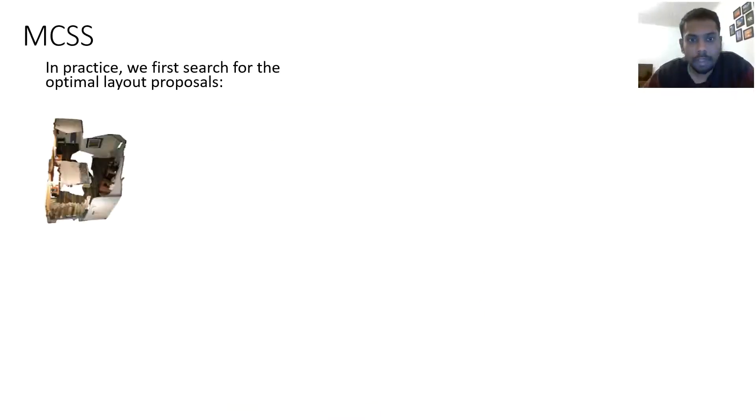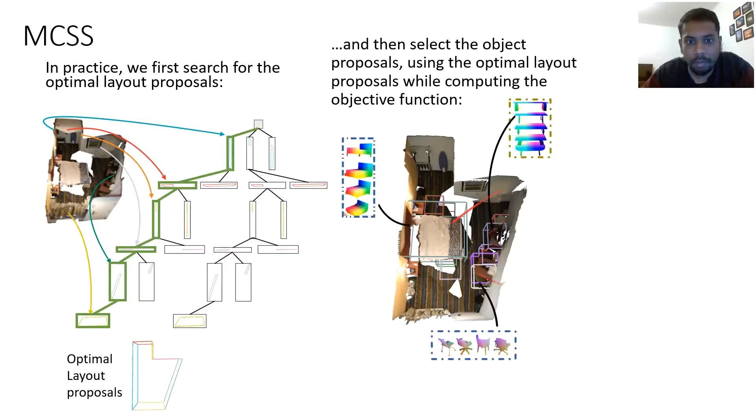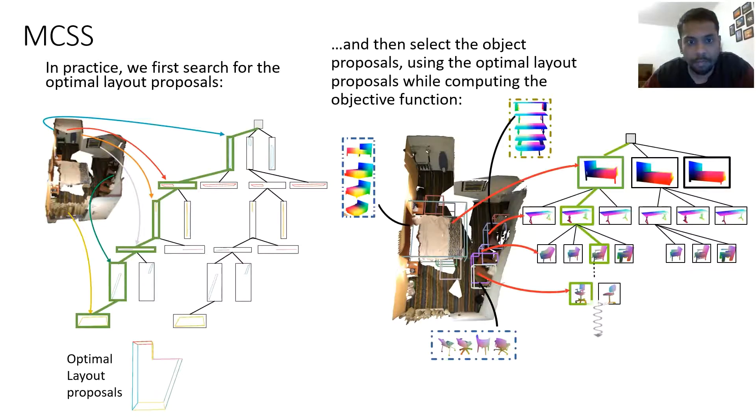In practice, we follow a two-stage approach where we first build the layout tree from its proposals and run MCSS to obtain optimal subset of layout proposals. We then build object tree separately using the object proposals. However, while searching the object tree using MCTS, we also use the optimal layout proposals in the evaluation function.